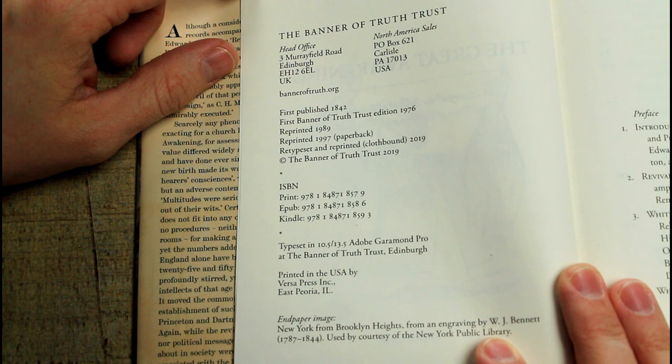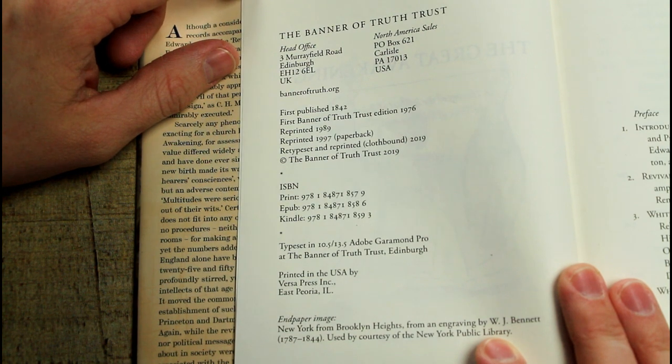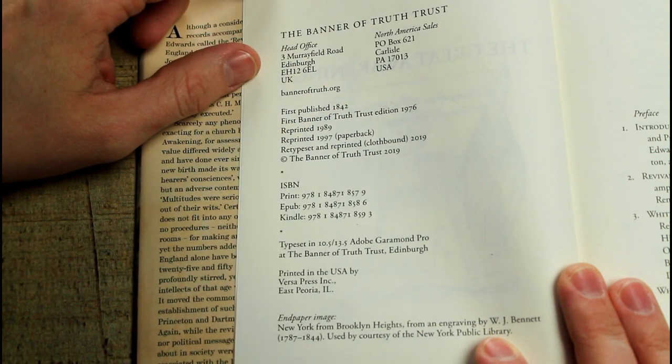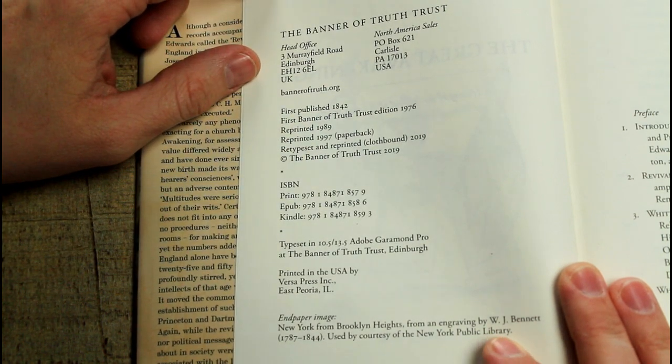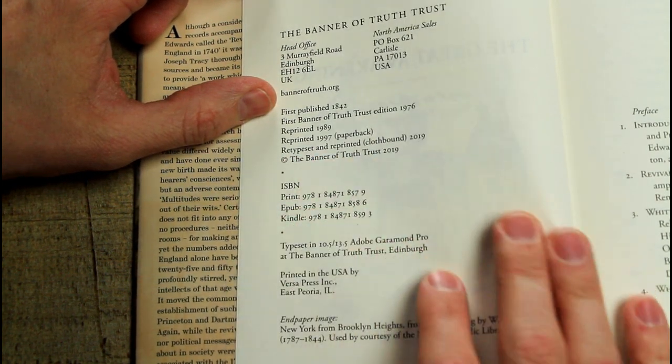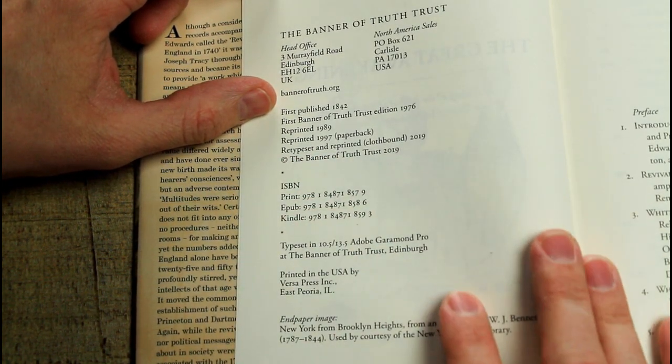So this book was first published in 1842. The first Banner edition was in 1976. We reprinted it in 1989 and then again in 1997 in a paperback, but it's been a while since we've had it in print and we've recently re-typed it and reprinted it in this cloth bound edition here in 2019.